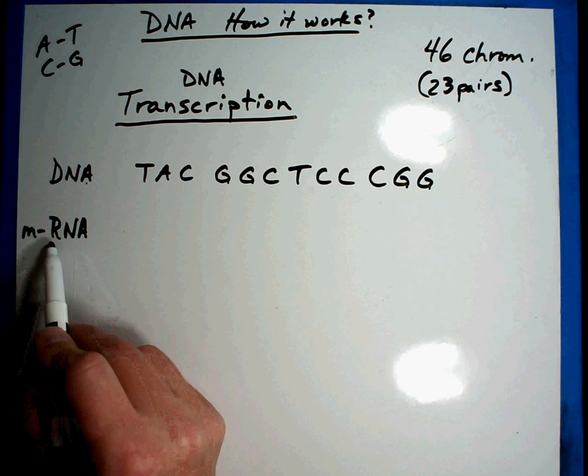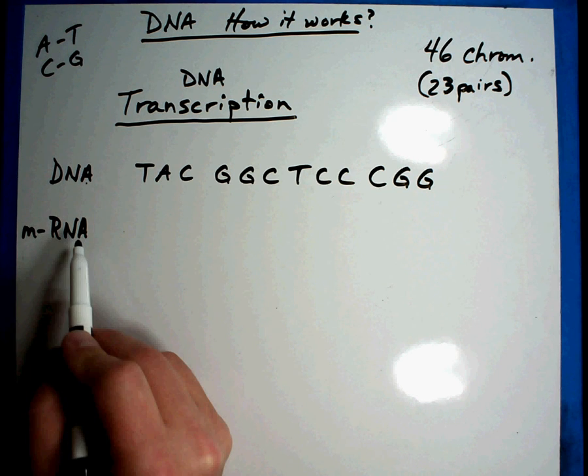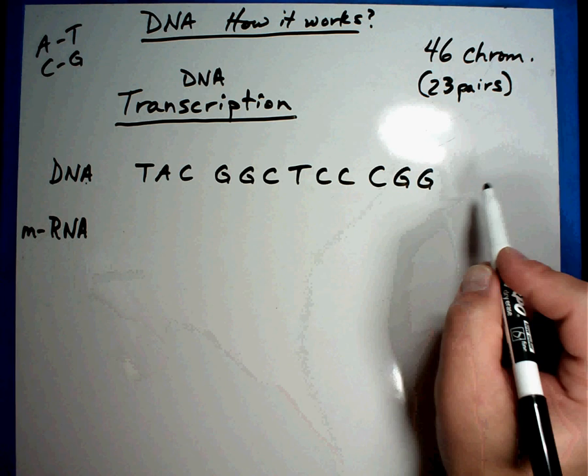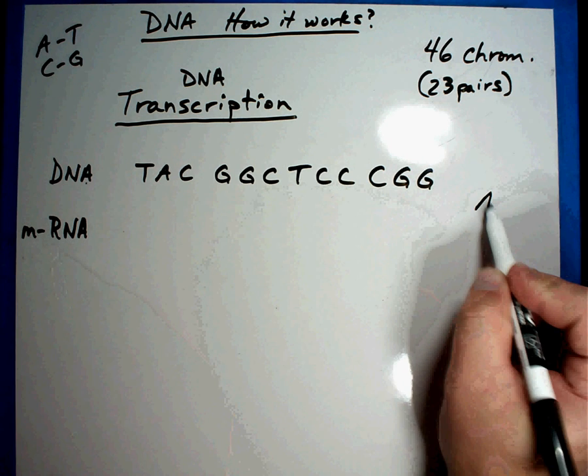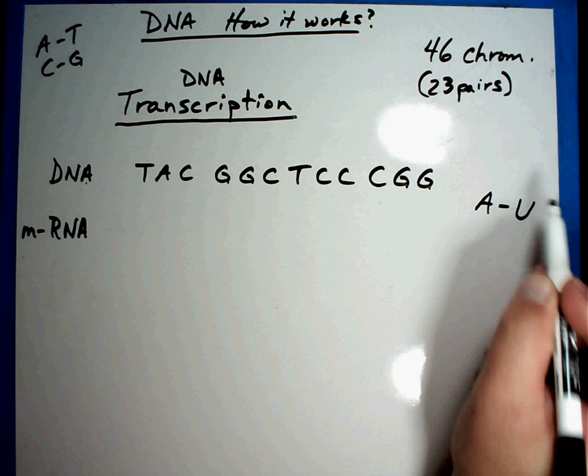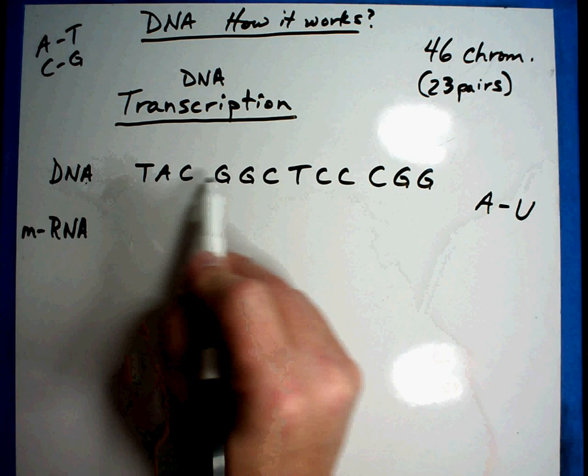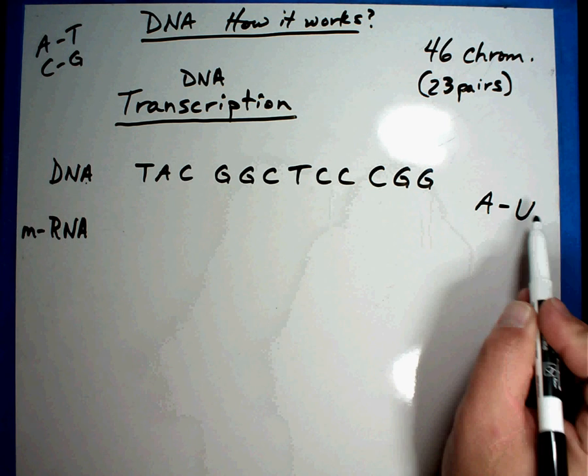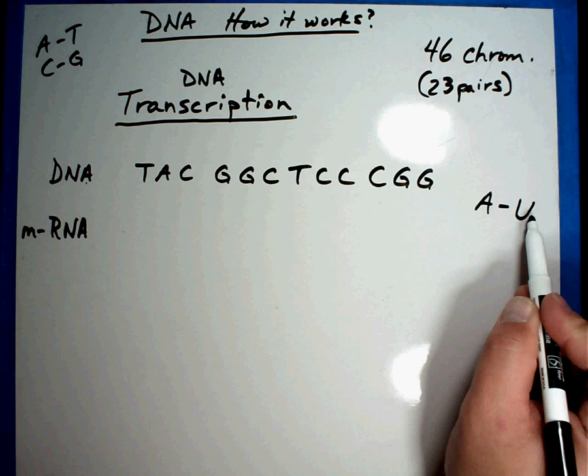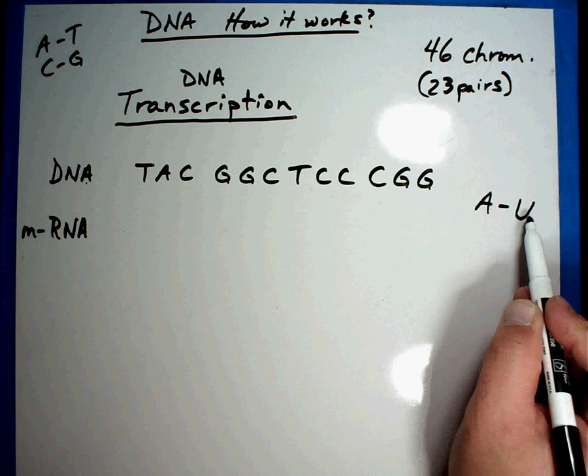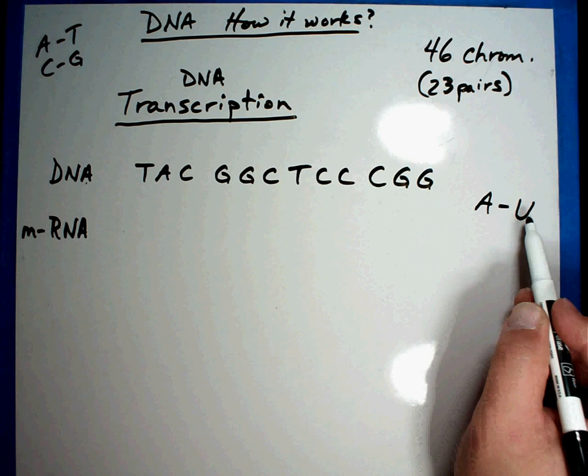The rules are a little bit different here. In RNA, whenever you have an A, you're going to attach it to a U. You'll notice there are no U's in DNA. In RNA, there's a new character called uracil - just the letter U is all you need to know. We'll practice that here in just a second, but let's see if we can make sense of this and why it does this.